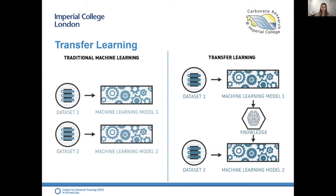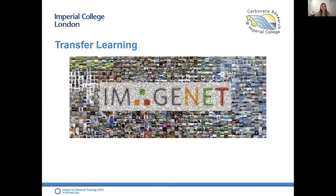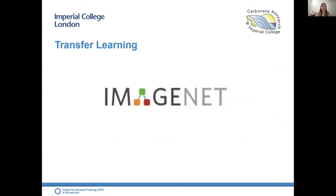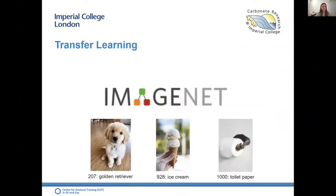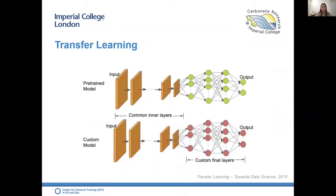This is particularly useful for reducing resource-intensive training times and for tasks where limited training data are available, which is common in geology. A range of high-performing models have been developed for image classification, demonstrated on the ImageNet Large Scale Visual Recognition Challenge. These models were trained on 1 million images across 1,000 categories — everything from golden retrievers to toilet paper. We can use the representations learned by one of these networks to extract meaningful features from a new dataset.